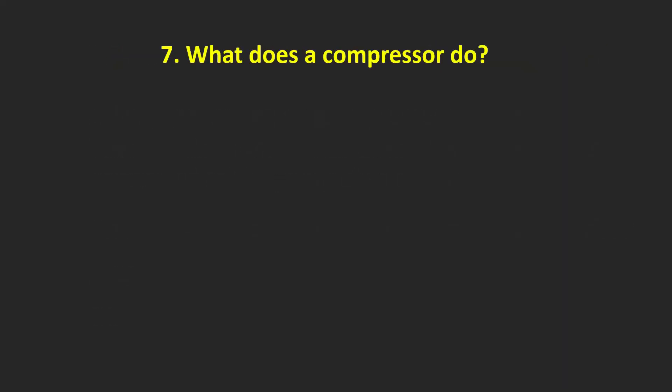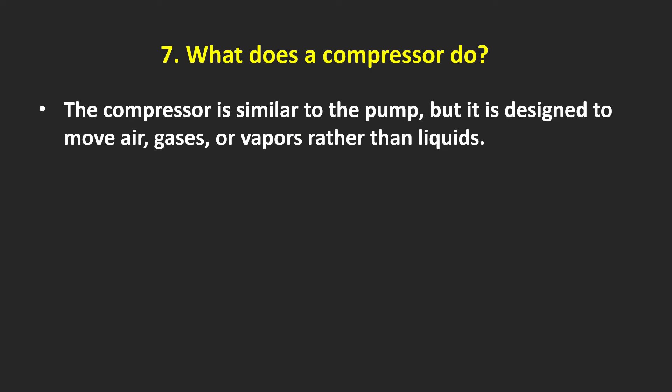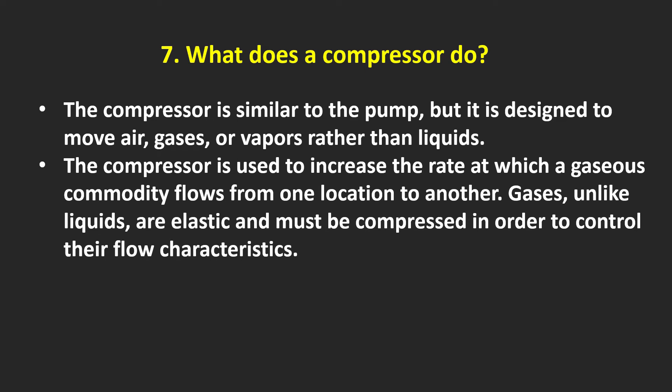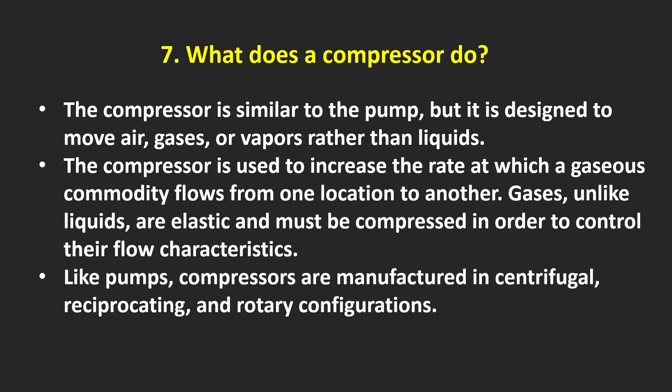What does a compressor do? A compressor is used to increase the rate at which a gaseous commodity flows from one location to another. Gases, unlike liquids, are elastic and must be compressed in order to control their flow characteristics. Like pumps, compressors are manufactured in centrifugal, reciprocating, and rotary configurations.